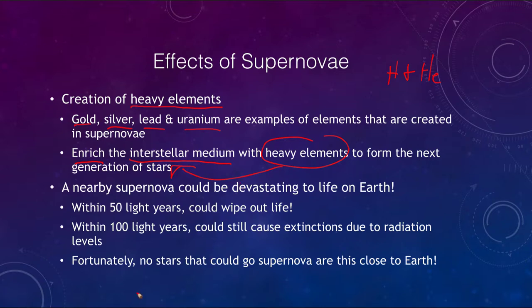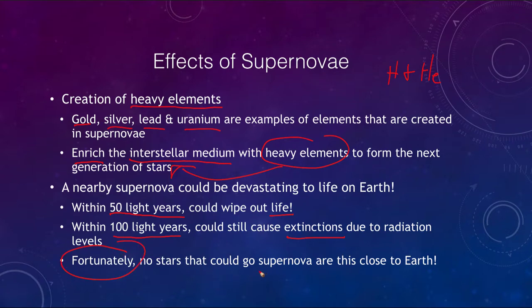A supernova could actually be devastating if it occurred close to Earth. Calculations show that a supernova within about 50 light years would wipe out all life on the planet; within about 100 light years, it could still cause great extinctions due to high radiation levels. Fortunately, there are no stars that could go supernova this close to Earth — the nearest candidates are many hundreds of light years away.